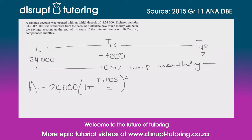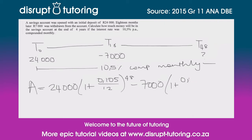At 18 months we pulled out R7,000, so we need to subtract not only that R7,000 but also the interest it would have accumulated if left in the account. So we subtract R7,000 multiplied by (1 + 0.105/12) to the power of 30, because 48 minus 18 equals 30 months of lost interest.